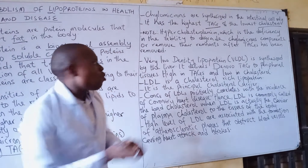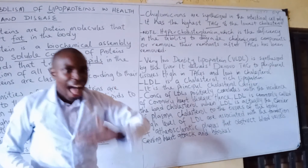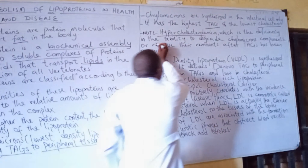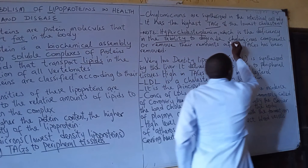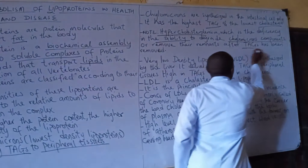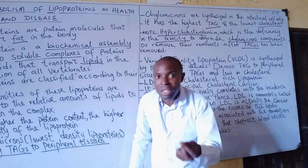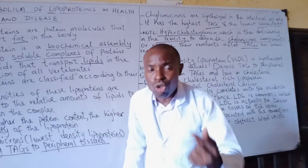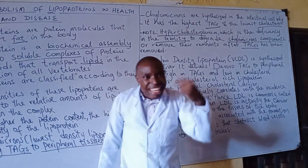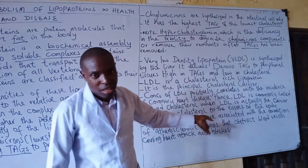There is a condition called hypercholesterolemia — from the word 'hyper' and 'cholesterol.' It is a deficiency in the inability to degrade chylomicron components or remove their remnants after TAG has been removed. Do not forget that the function of chylomicrons is the delivery of triacylglycerol to the peripheral tissues, and TAG is highest in chylomicrons while cholesterol is lowest.